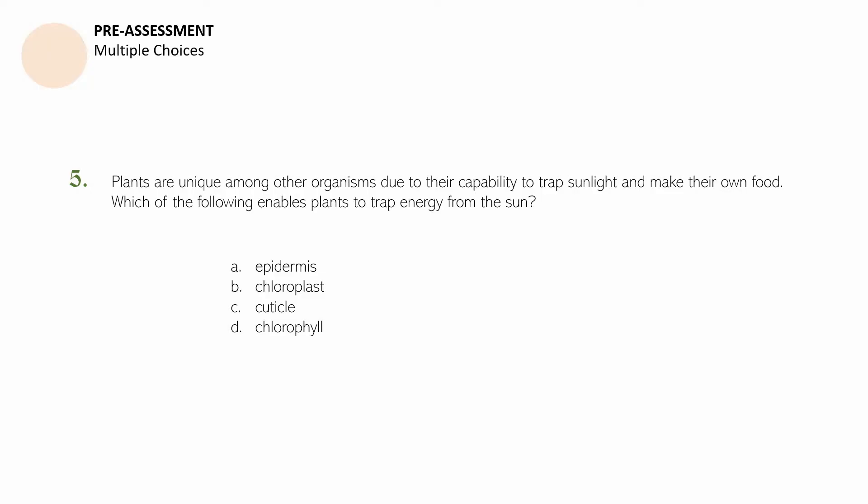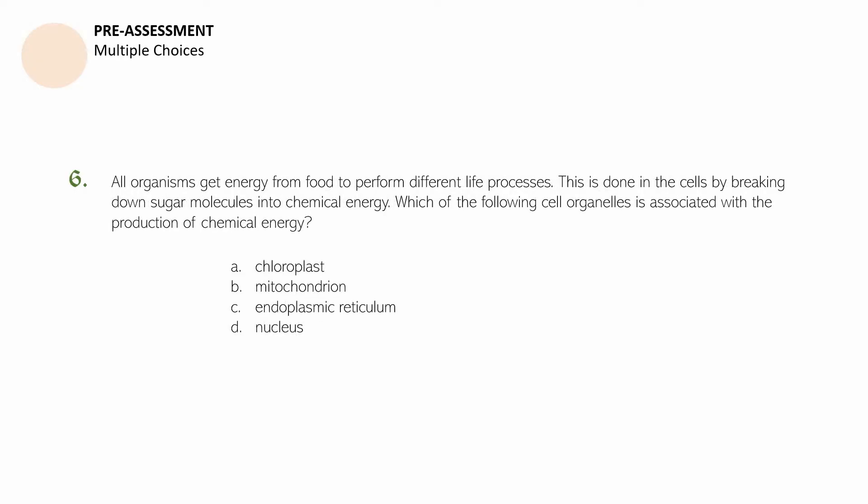Question number five: Plants are unique among other organisms due to their capability to trap sunlight and make their own food. Which of the following enables plants to trap energy from the sun? You may pause this video to get more time. Question number six: All organisms get energy from food to perform different life processes. This is done in the cells by breaking down sugar molecules into chemical energy. Which of the following cell organelles is associated with the production of chemical energy? A. Chloroplast. B. Mitochondrion. C. Endoplasmic reticulum. D. Nucleus. You may pause this video to get more time.